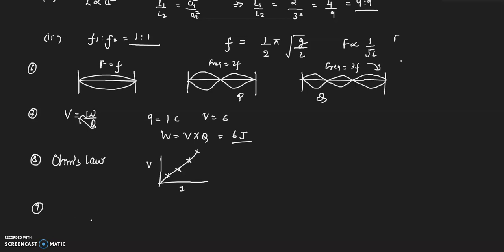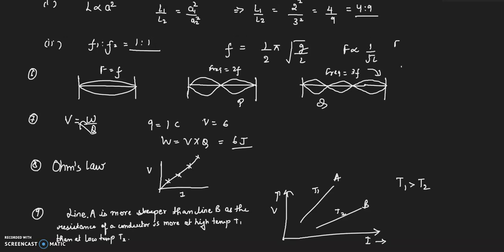There is this V-I graph for a conductor at two temperatures. I will just show you. This is A and this is B. V and this is I. T1 and T2 are given. These are two different temperatures where temperature 1 is greater than temperature 2. Line A is more steeper than line B as the resistance of a conductor is more at high temperature T1 than at low temperature T2. They may ask you which resistance is more, so I told you about this.